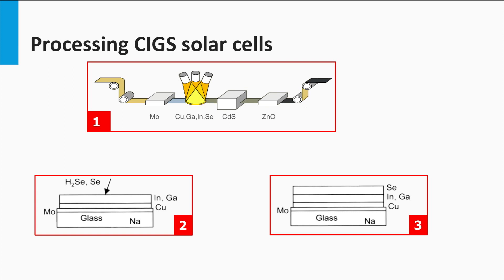Companies that use or have used the co-evaporation process are Würth Solar, Global Solar and Ascent Solar. Among CIGS companies using sputter approaches are Showa Shell, Solar Frontier, Avancis, MiaSolé, and Honda Soltec.